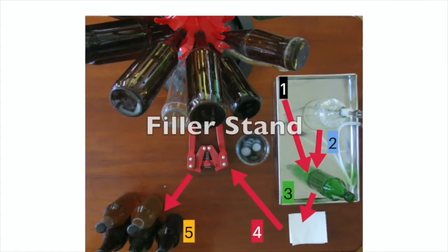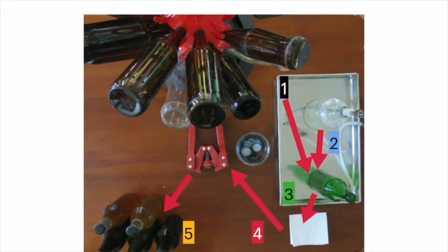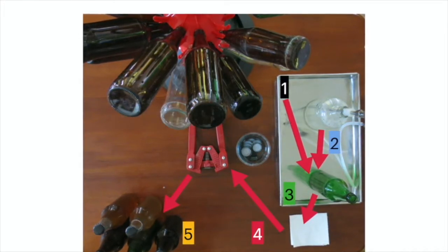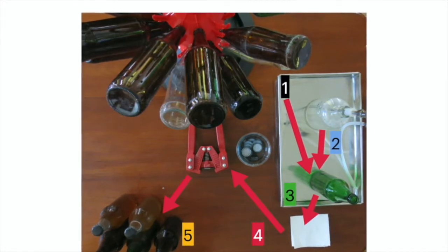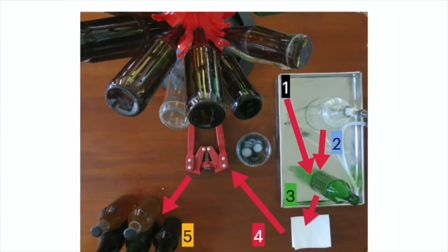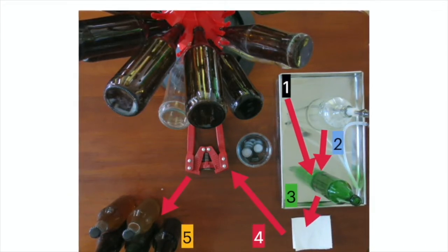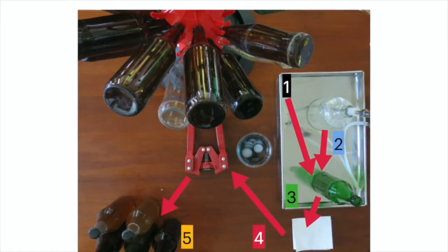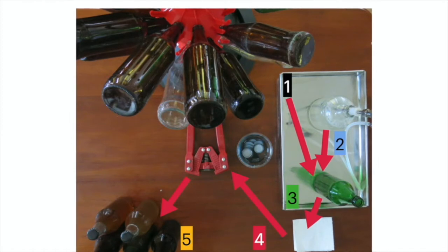In the second step, I take the filler from its stand, which is the transparent bottle which is filled with sanitizer and place it inside the beer bottle, seen in green next to it, and I fill it up with beer using the bottle filler. In step number three, once the bottle is filled, I keep the filler back in its bottle stand and the filled beer bottle on a tissue which will absorb any spills.